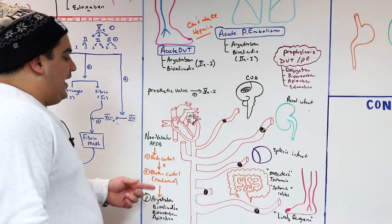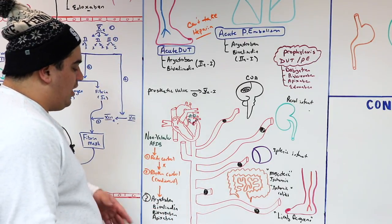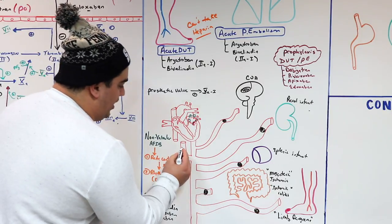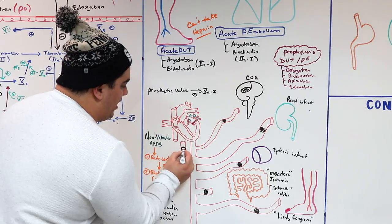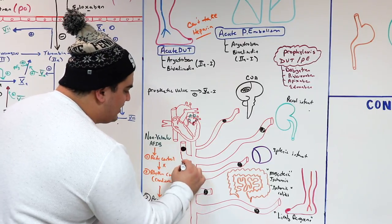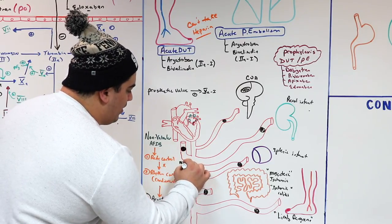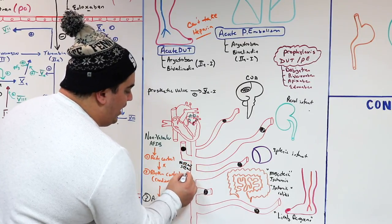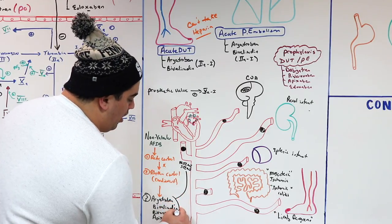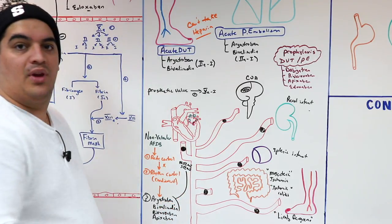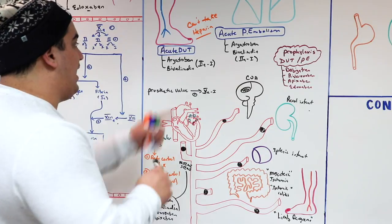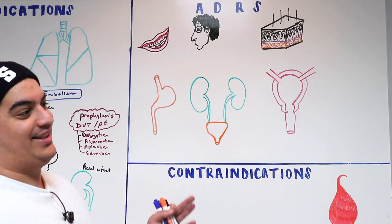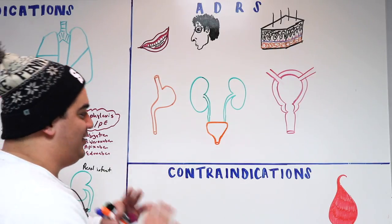Another indication: if a patient has an allergy to heparin or heparin-induced thrombocytopenia and is having an NSTEMI or STEMI, you can give argatroban or bivalirudin as the IV alternatives to heparin in that acute coronary syndrome setting.